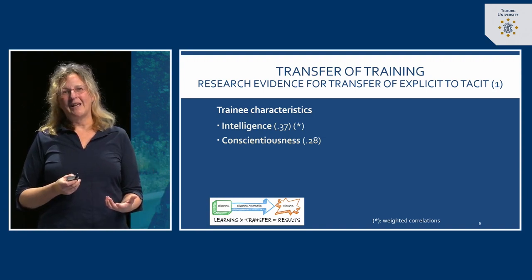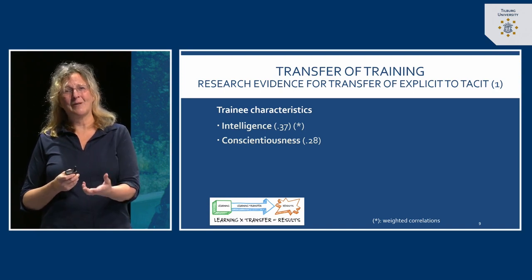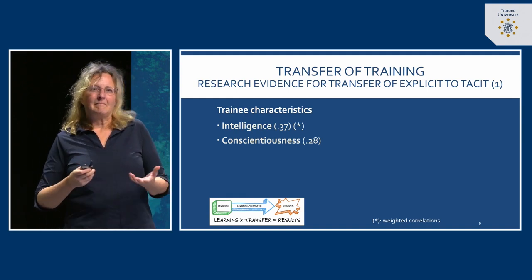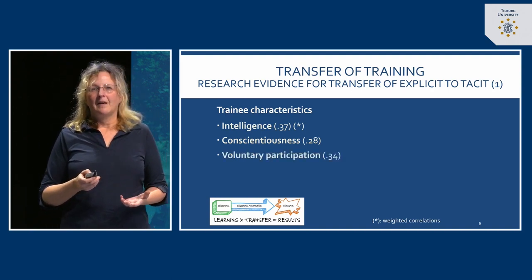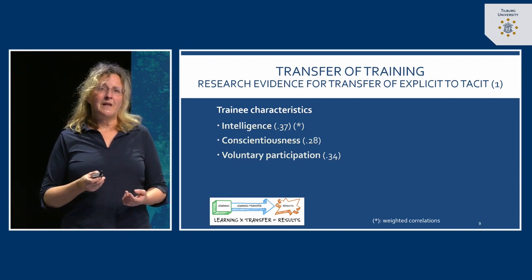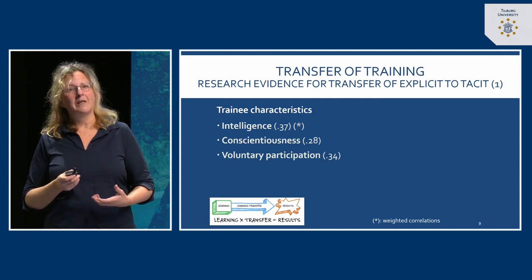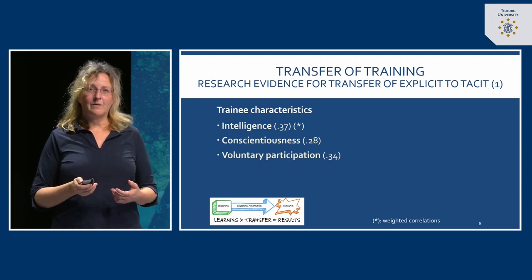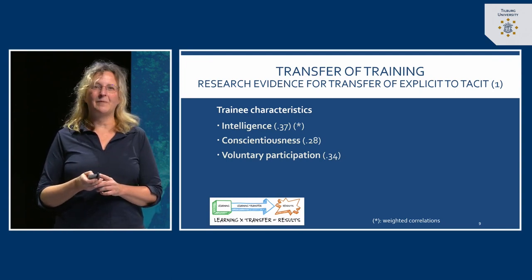There's a problem here because as an organization you want everybody to take the training if it's important for some goal, and you can't say someone can't take the course because they have a lower score on intelligence. So although this is theoretically interesting, it's not really practical. Other elements of Blume's meta-analysis are more relevant — for example, voluntary participation. If there's a motivation aspect, people will see more value in applying what they learned in practice.